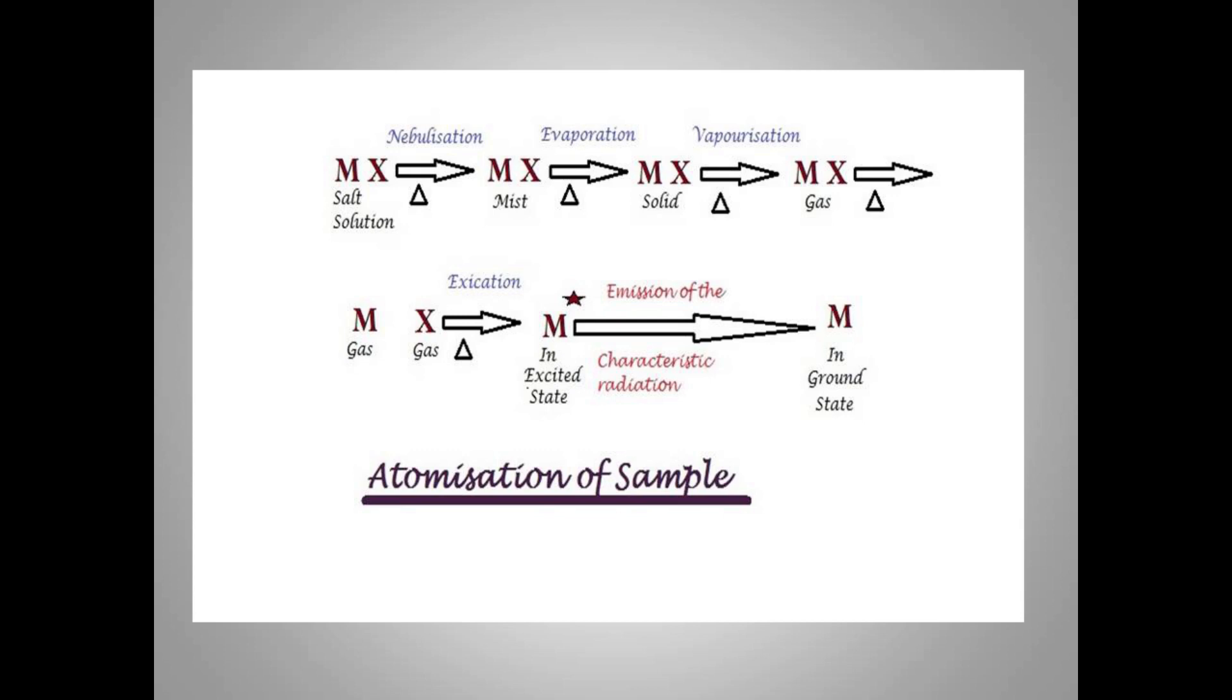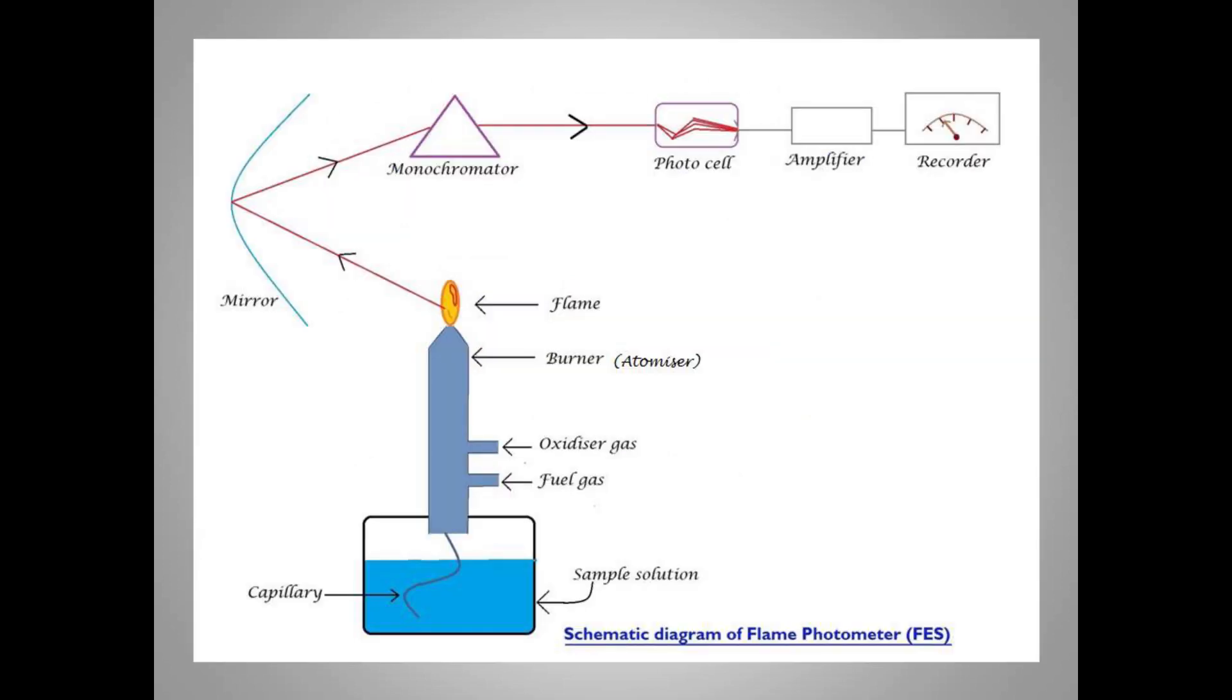This is the schematic diagram of flame photometer, which works on the principle of flame emission spectroscopy. Seen in the diagram is the burner, which is the important component of the flame photometer. The burner is attached to the sample solution. The sample solution reaches to the flame and then the further steps take place. The other components which can be seen are the mirror, the monochromator, the photocell, amplifier, and recorder.